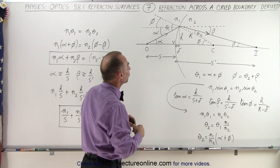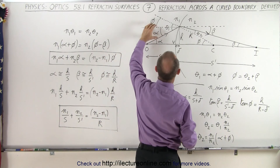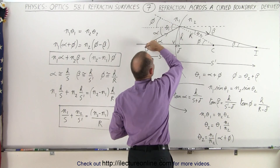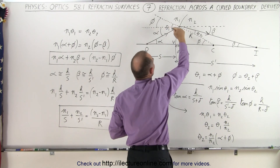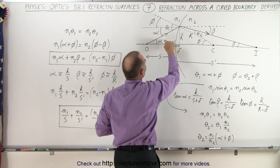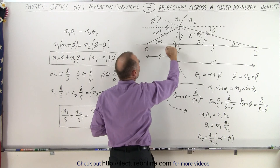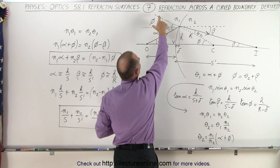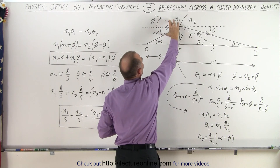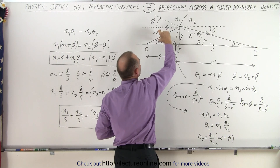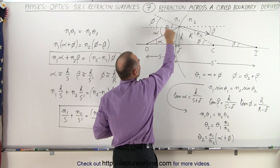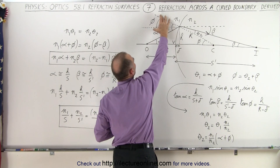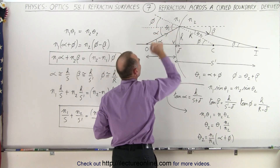We now define some additional angles. Theta sub 1, the incident angle relative to the normal, can be written as the sum of alpha plus phi. Alpha is the angle between the incident ray and the optical axis. Phi is the difference between theta sub 1 and alpha — these are alternate interior angles — so phi plus alpha equals theta sub 1.